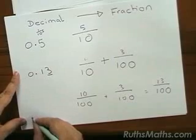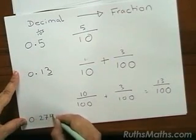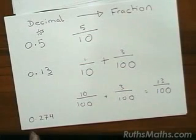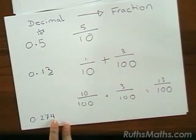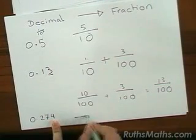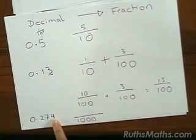Let's take one more example. If we go for 0.274, we have tenths, hundredths, and thousandths. So we're going to have something over one thousandth.